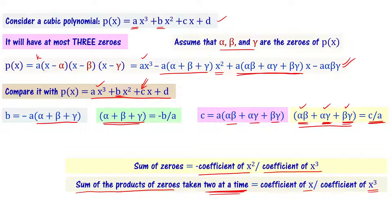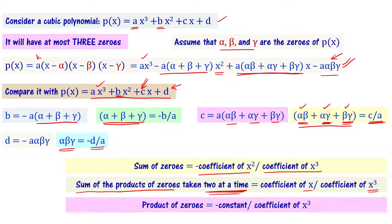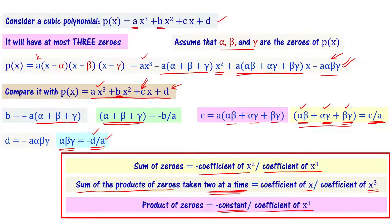For the third relation, comparing constant terms: d equals minus a times alpha beta gamma, so alpha beta gamma equals minus d by a. The product of zeros equals negative of the constant term divided by the coefficient of x cube. These are the three relations we have to note for cubic polynomials.